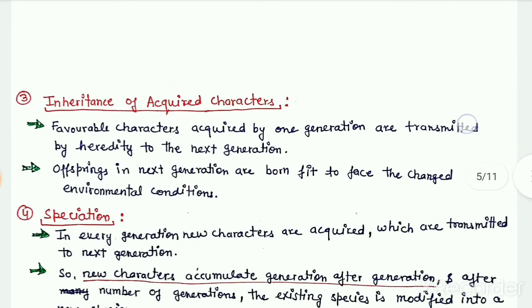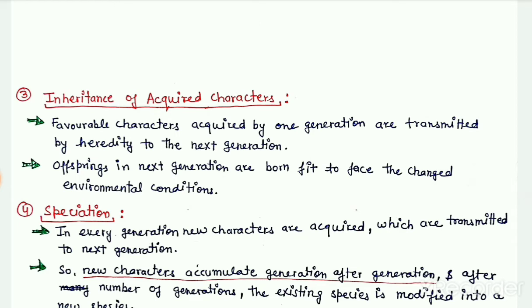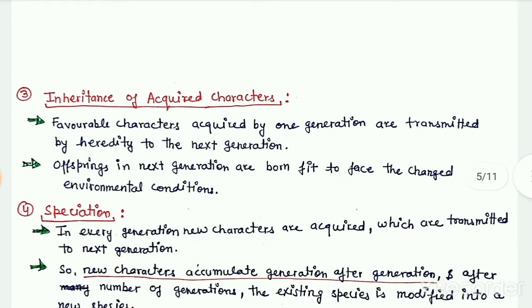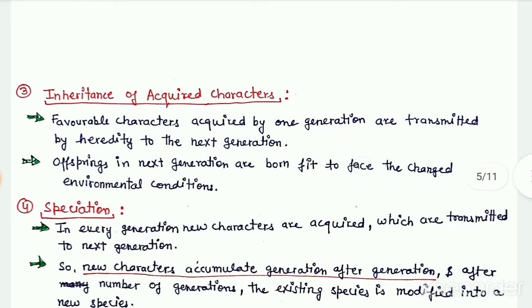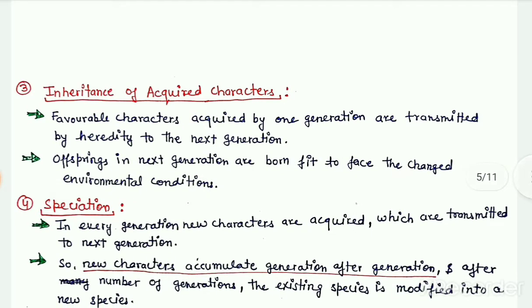The next postulate of Lamarckism states that the favorable characters an organism acquires during its lifetime are inherited by the next generation. Due to this inheritance, the offspring of the next generation are born fit to face the changed environmental conditions.